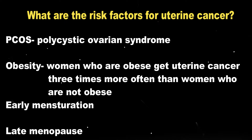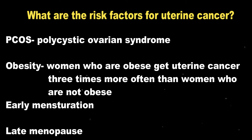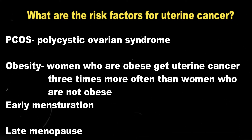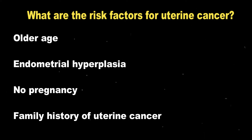Now, what are the risk factors for uterine cancer? First of all, PCOS or PCOD — means polycystic ovarian syndrome or polycystic ovarian disease. Second one is obesity. Yes, obesity is also a risk factor for uterine cancer. As we know from my earlier video, obesity is a risk factor for most diseases, so please control obesity with very good diet control and doing regular exercise. Women who are obese are approximately three times more prone for uterine cancer than non-obese ladies.